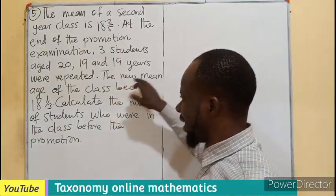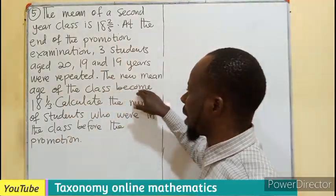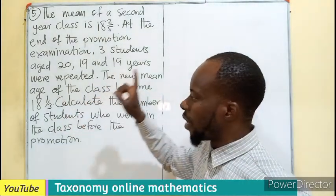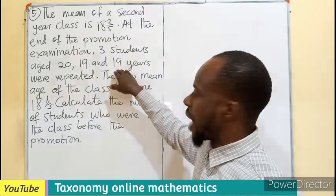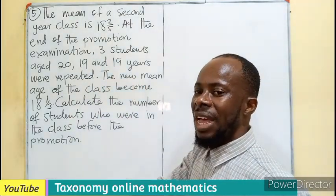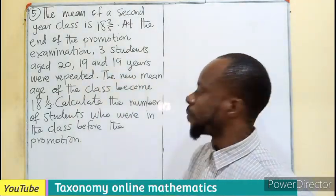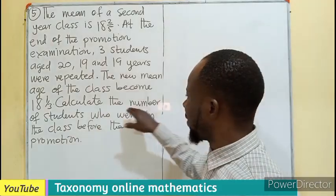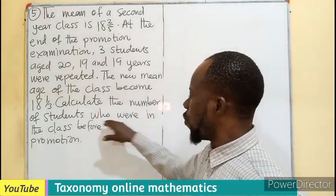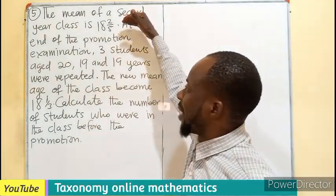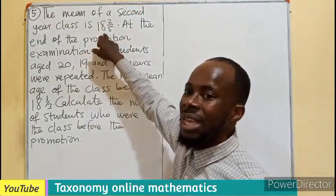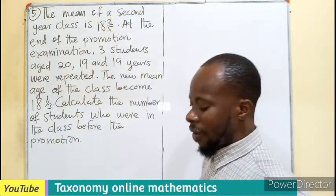The new mean of the class becomes 18 and 1/3. The 3 people that are repeated are not part of the new class now. Calculate the number of students who were in the class before the promotion.